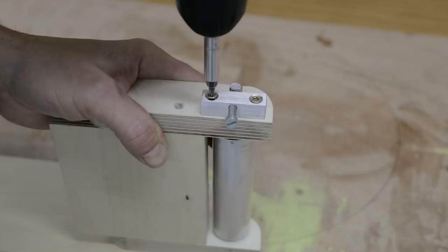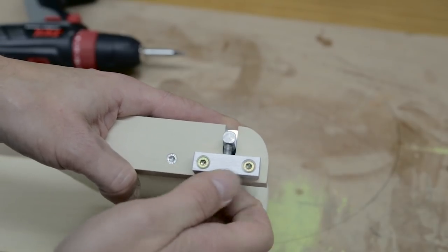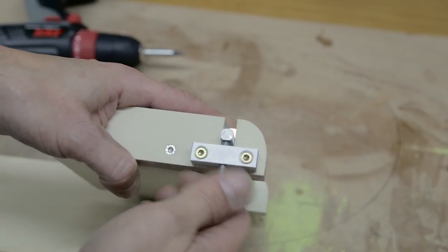I put it in place with a couple of screws. And here you can see how it works. This will allow me to move the sanding belt up or down.